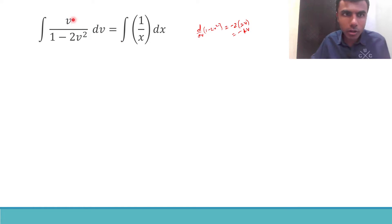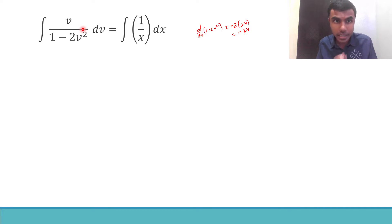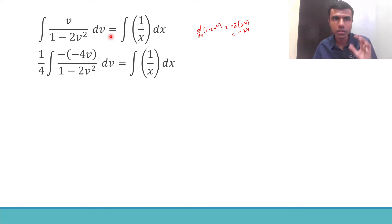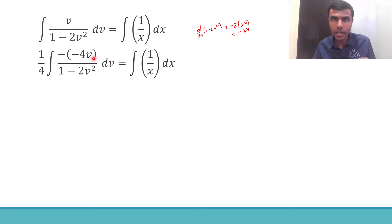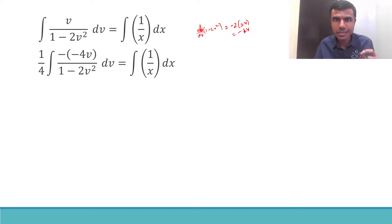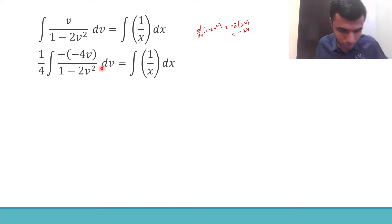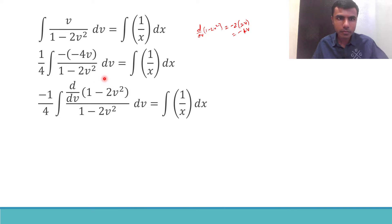In the numerator I already have a v, but I need minus 4v. So for that, I multiply and divide by 4: putting 4v in the numerator and 1/4 outside. Then I write plus 4v as minus of minus 4v, so that I get minus 4v in the numerator, which is nothing but the derivative of (1 minus 2v²). That's the purpose of all this manipulation. Any doubts, please ask in the comments.